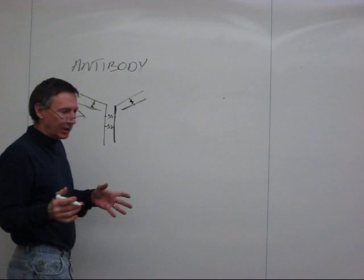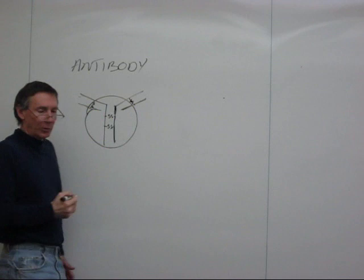If you look at an antibody of a particular class, there are certain different types, there are cell bound ones and circulating ones and so on. Within a class of antibodies, all of this portion of the antibody is constant.